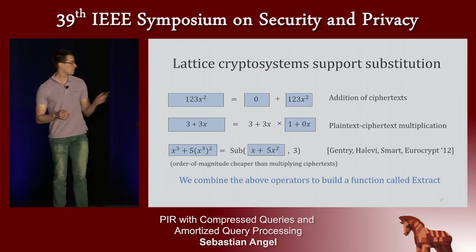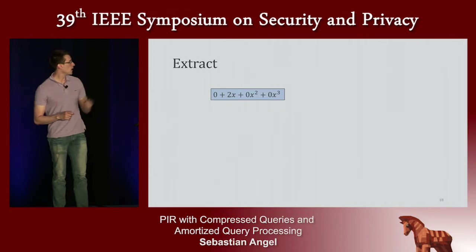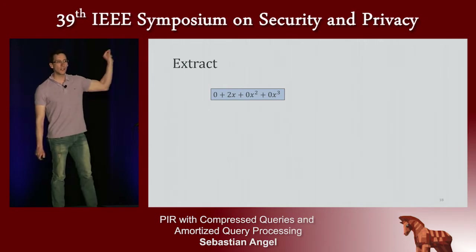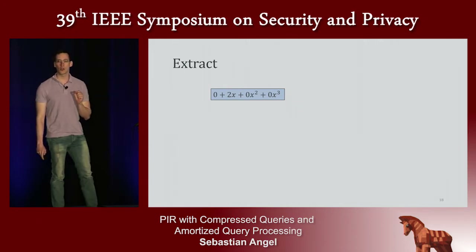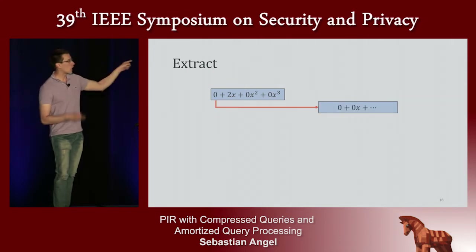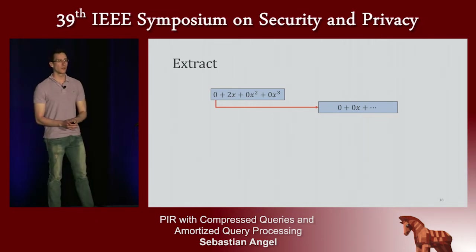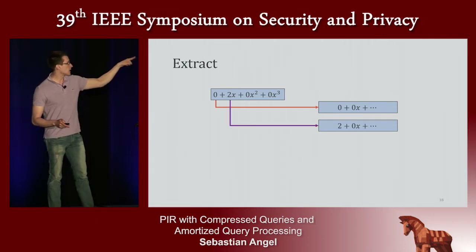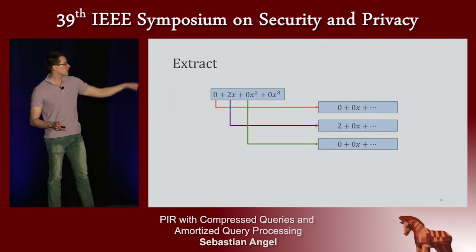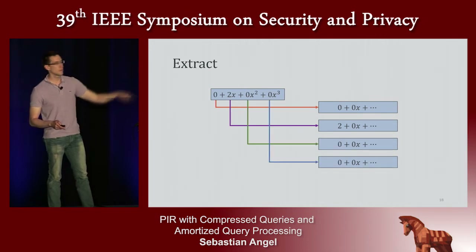We can use three operations — addition of ciphertexts, plaintext-ciphertext multiplication, and substitution — to build a function called extract. Extract starts with an encryption of a polynomial and allows you to take each of the coefficients and place them in the constant term of a new encrypted polynomial. For example, take the coefficient 0 and place it in the constant term of a new polynomial; take the coefficient 2 and place it in the constant term of a new encrypted polynomial; and so on.